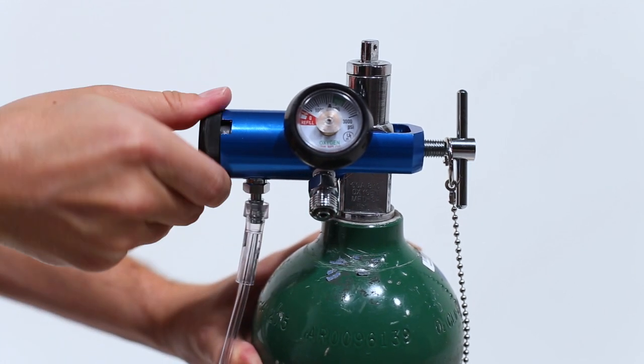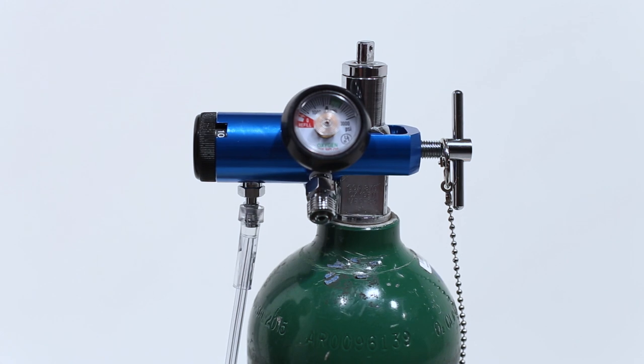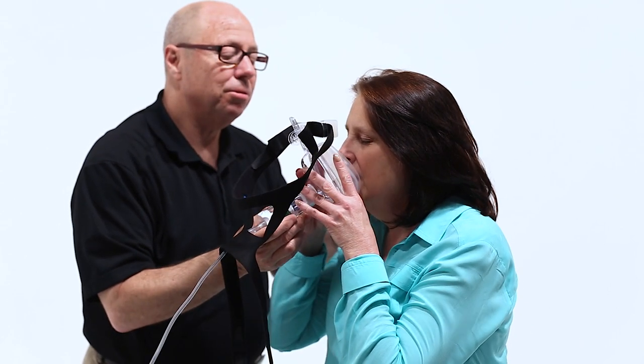After you connect the oxygen tubing, you will adjust your flow settings to 10 liters per minute. Do not exceed 10 liters per minute. Once you feel the flow come through the mask, you are then able to place it on your patient.